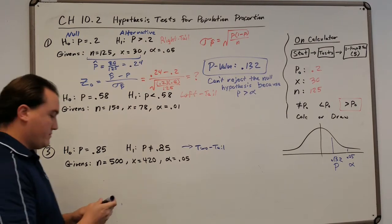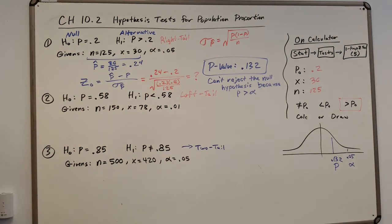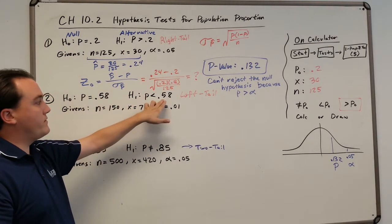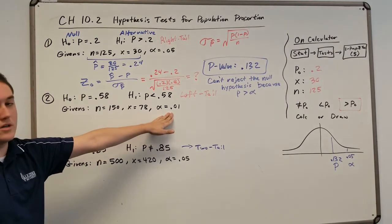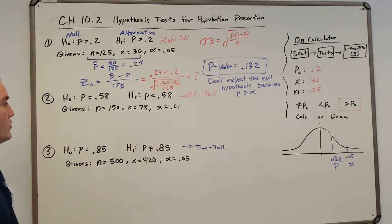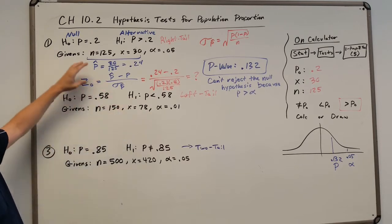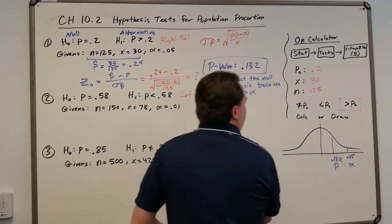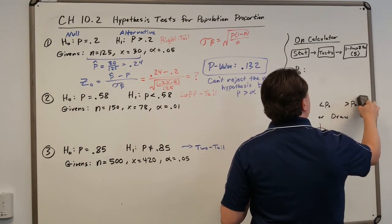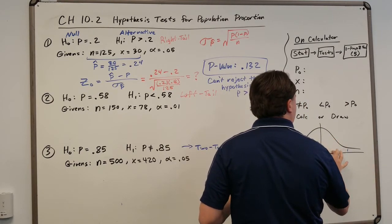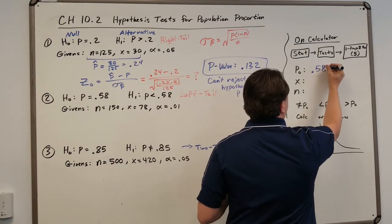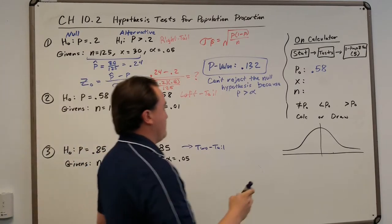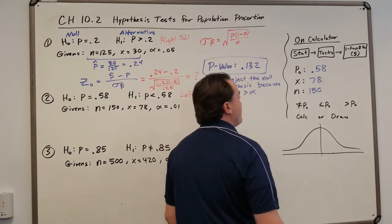So let's do the next problem. So we have a null hypothesis of p equals 0.58 or 58 percent. We're looking at a left tail because it's less than, right? Left 0.58, and they give us a sample size of 150, 78 people had that characteristic, with an alpha or confidence of 99 percent or a margin of error of 0.01. But we do the same calculations anyways. We'll skip all this for now because we don't need to calculate this with the calculator. p equals 0.58, x is 78, n is 150. It is less than.